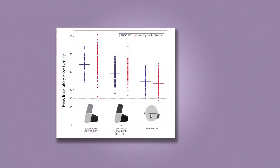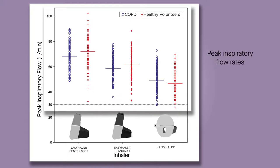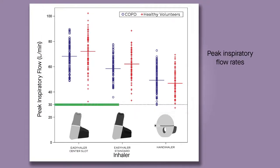The patients and the healthy volunteers achieved similar peak inspiratory flow rates for all the devices. In addition, all of the subjects achieved the flow rate of 30 liters per minute required for the E-Z-Haler to be effective, even patients with severe airway obstruction.